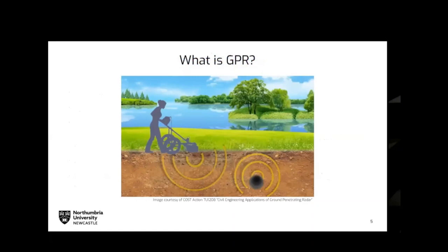What is ground penetrating radar? Basically, we're sending a pulse of electromagnetic energy — sometimes into the subsurface, sometimes into different structural components. Where we encounter a discontinuity in electrical properties — electrical permittivity or electrical conductivity — we get a reflected wave, which we detect at the surface and use to build up an image of the subsurface or look inside a structure.